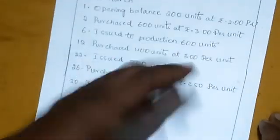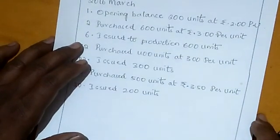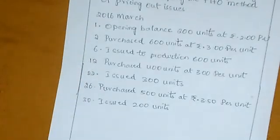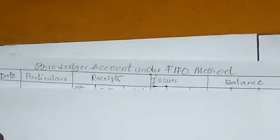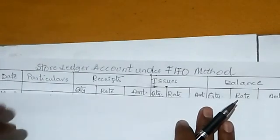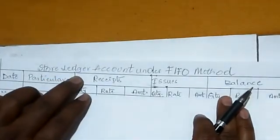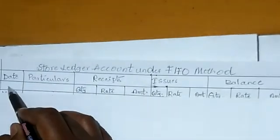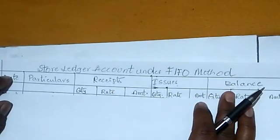All receipts will be entered in the receipt column, all issues will be entered in the issue column, and the balance will be shown in the balance column. So now we will solve this problem in a simple, easy, logical way. The store ledger account is under the FIFO method. There are five columns: date column, particulars column, receipts, issues, and balance.